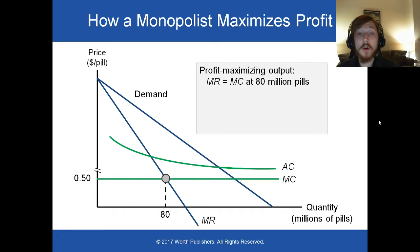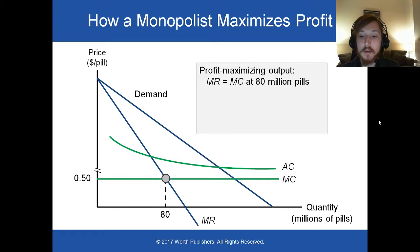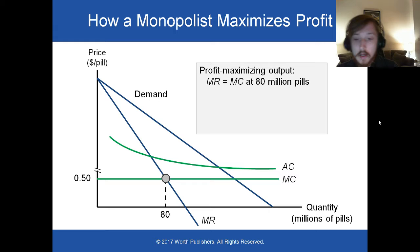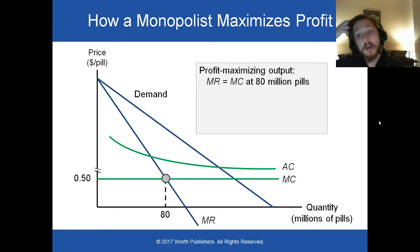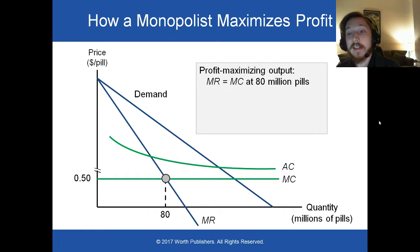We find the profit-maximizing output in the same way as always: where marginal cost equals marginal revenue. In our production of AIDS drugs example, our profit-maximizing output is 80 million pills.